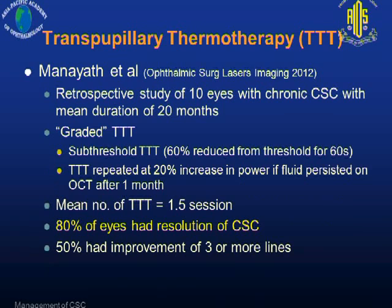Another series published last year performed what is called graded TTT. Patients were initially treated with a sub-threshold TTT of about 60% of the threshold for 60 seconds. If the patient had persistent fluid at one month, the power was increased by about 20% for retreatment. With this protocol, they found that resolution of CSC was achieved in about 80%, with improvement of three or more lines in 50%.